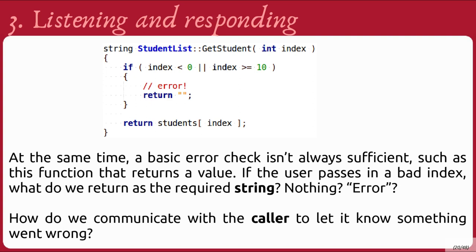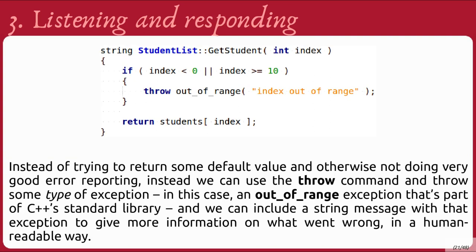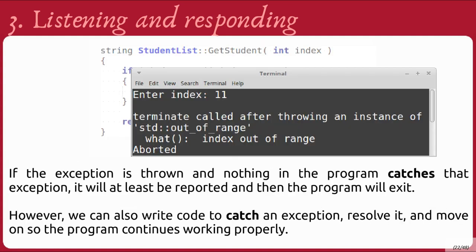At the same time, a basic error check isn't always sufficient, such as a function that returns a value. If the user passes in a bad index, what do we return as the required string? Nothing? An empty string? The text 'error' in a string literal? How do we communicate with the caller to let it know something went wrong? Instead of trying to return some default value with poor error reporting, we can use the throw command and throw a specific type of exception — in this case, the out-of-range exception from the C++ standard library — and include a string message for more human-readable information. If the exception is thrown and nothing catches it, it will at least be reported when the program exits. However, we can also write code to catch the exception, resolve it, and then move on so the program continues working properly.